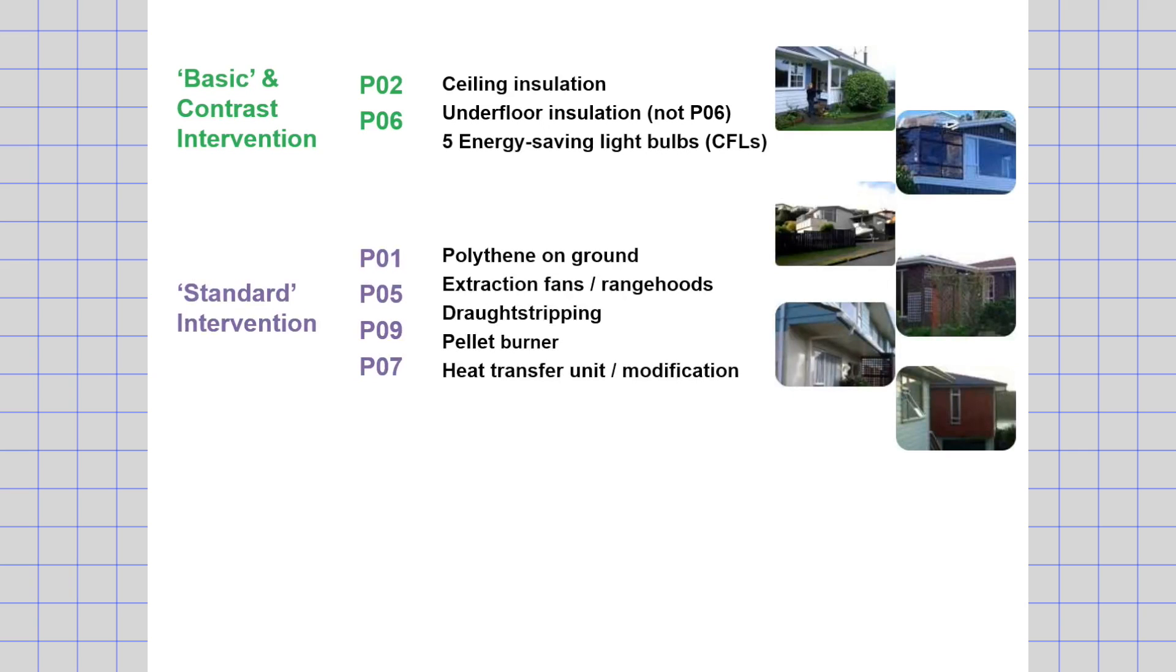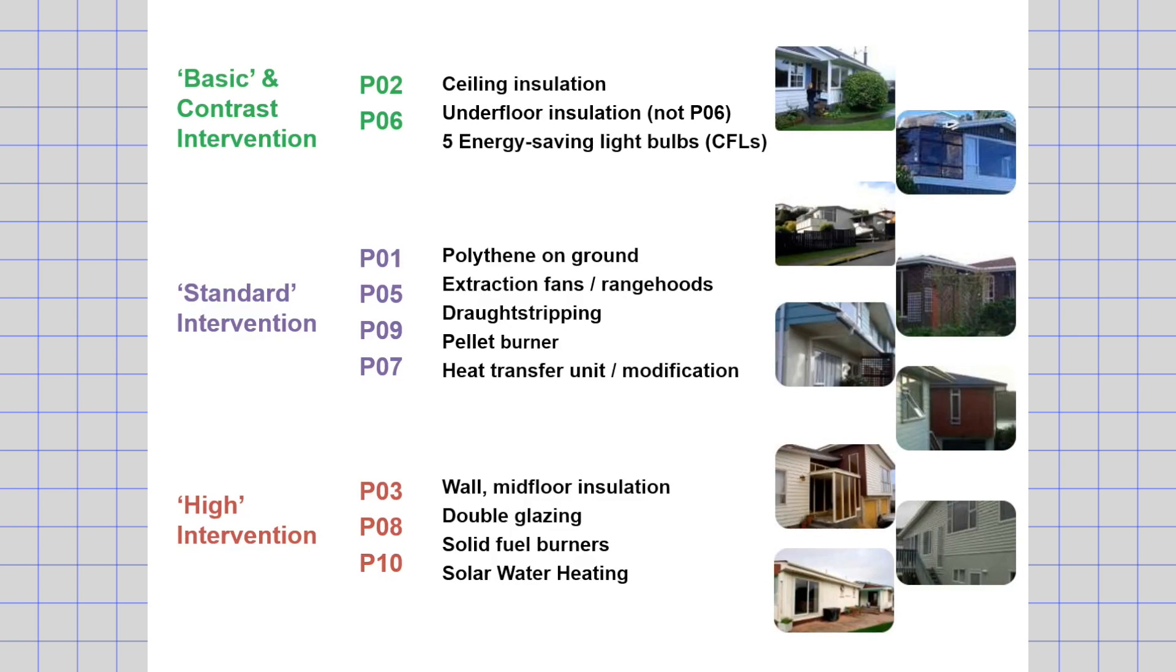So what happens to the nine houses that we examined? Well, they were subject to three types of intervention. A basic intervention, including ceiling and floor insulation. A standard intervention, which included draft stripping and improvements to the heating systems. And a high intervention, which included wall insulation, the installation of double glazing, and solid fuel burners as well.